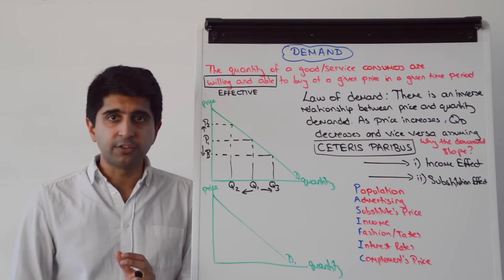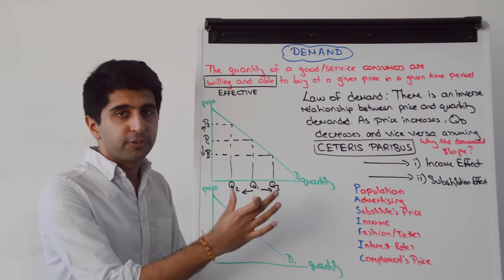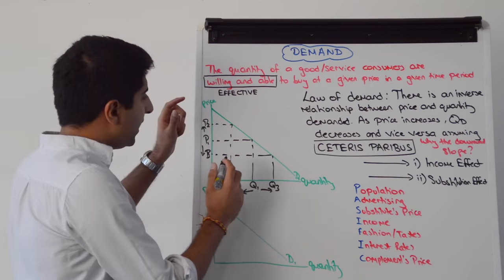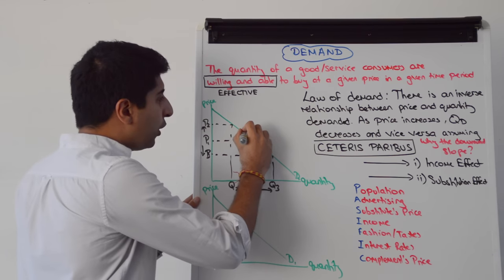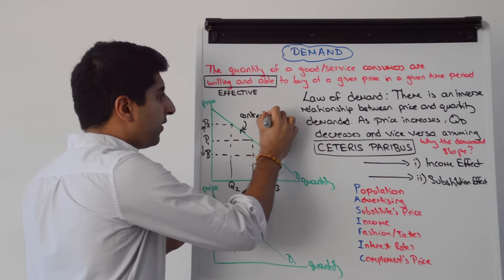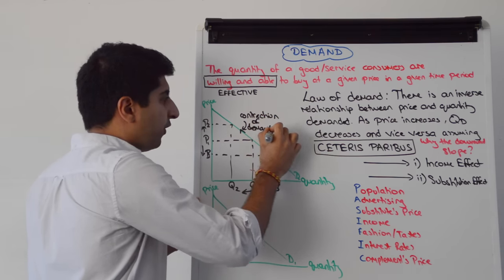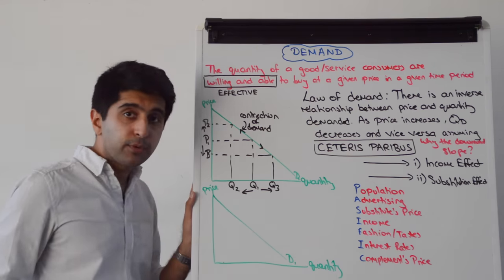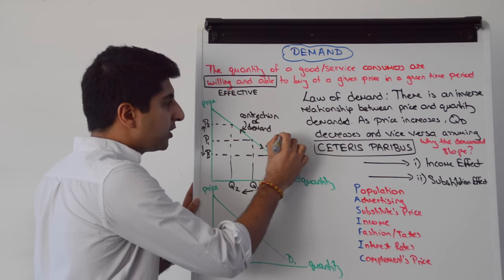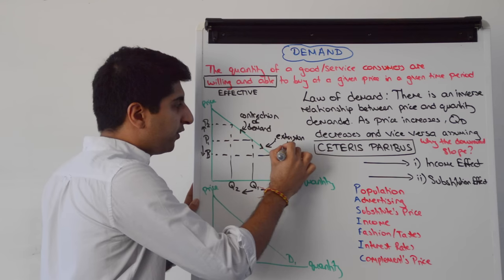When price changes, to get to the law of demand theory, we assume Ceteris Paribus, which means we move along the curve. When we increase price, we move along the curve — and that is called a contraction of demand. Whereas when we decrease the price, we see an increase in quantity demanded — that's called an extension of demand.